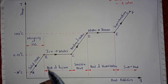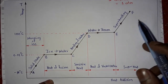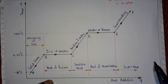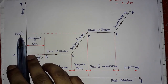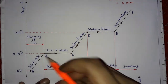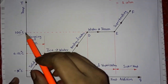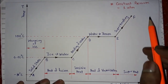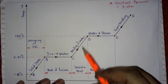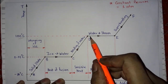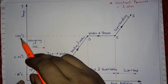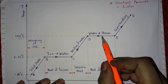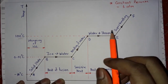Let's see on the formation of steam graph. This is the formation of steam process, or you can say the phase change process of a pure substance. This is a temperature versus heat addition graph. Here, this is the line at 100 degrees Celsius temperature of water at constant pressure of one atmosphere.